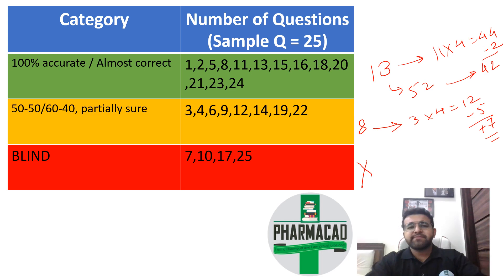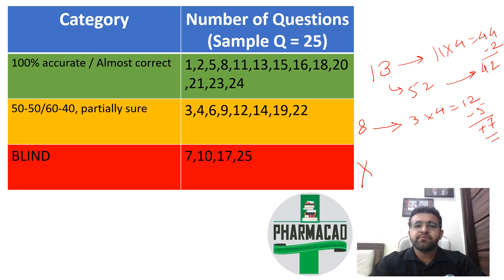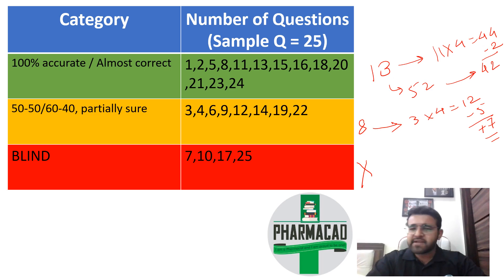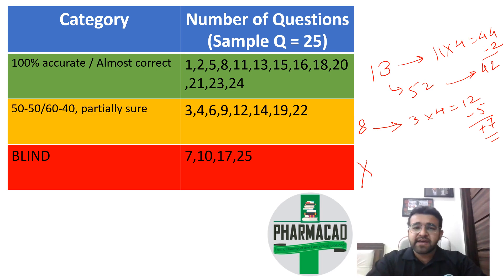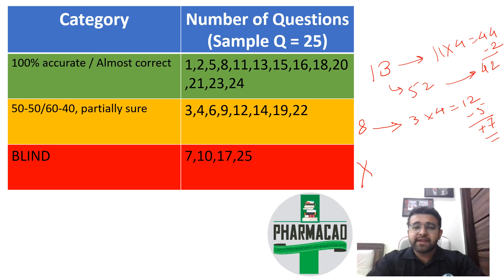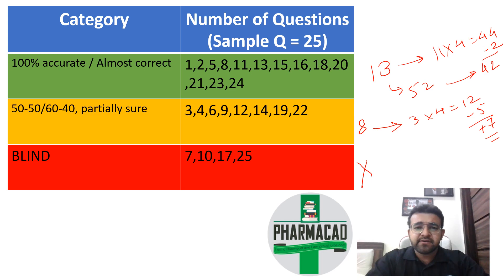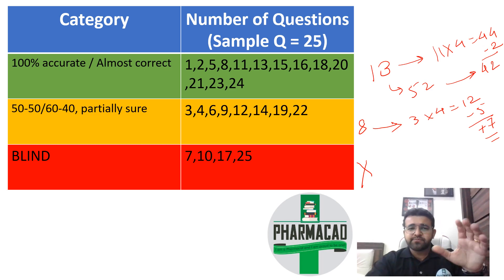Every category is important — in every category, how many numbers are there, and based on that we have to change our strategy. We will discuss our strategy after you give your mock paper. On 19th, you guys give the mock paper sitting at home — that's absolutely fine. On 26th we meet at the Dadar center and analyze your performance.